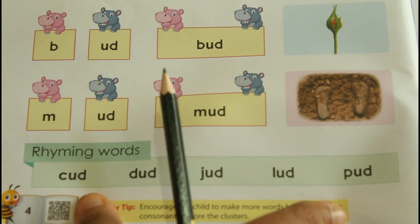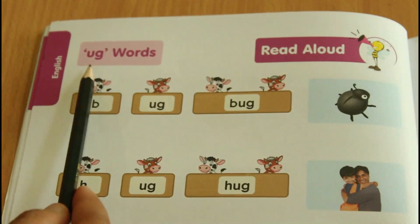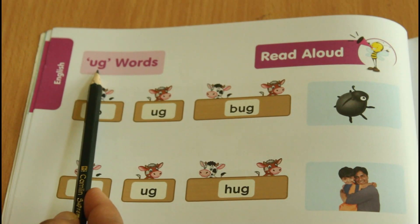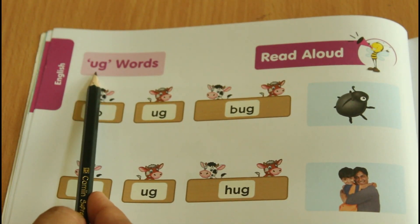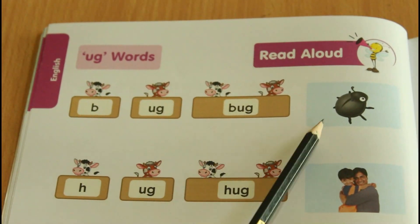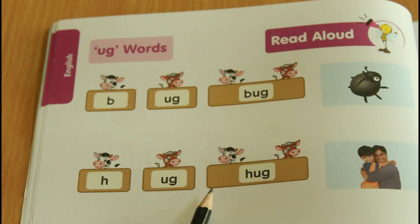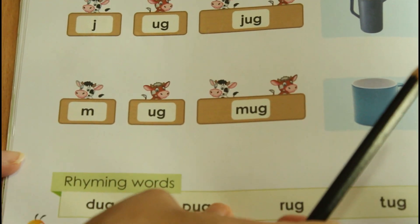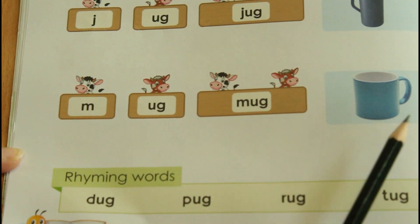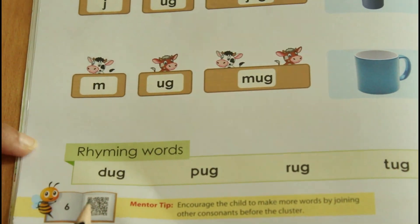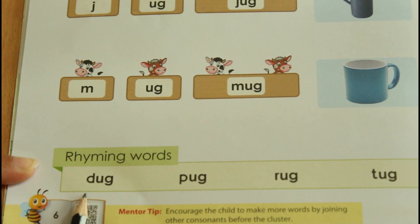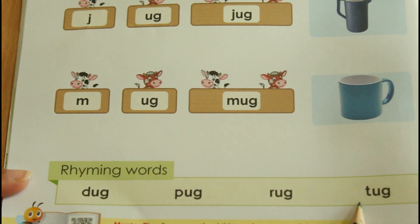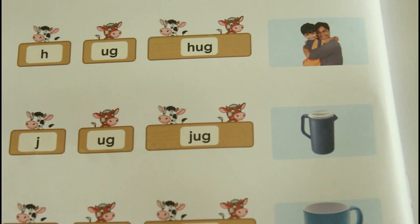The next word family is UG. UG words — always remember the word family sound: 'ug.' B-ug: bug. H-ug: hug. J-ug: jug. M-ug: mag. And the rhyming words: dug, pug, rug, thug. So these are the UG family words.